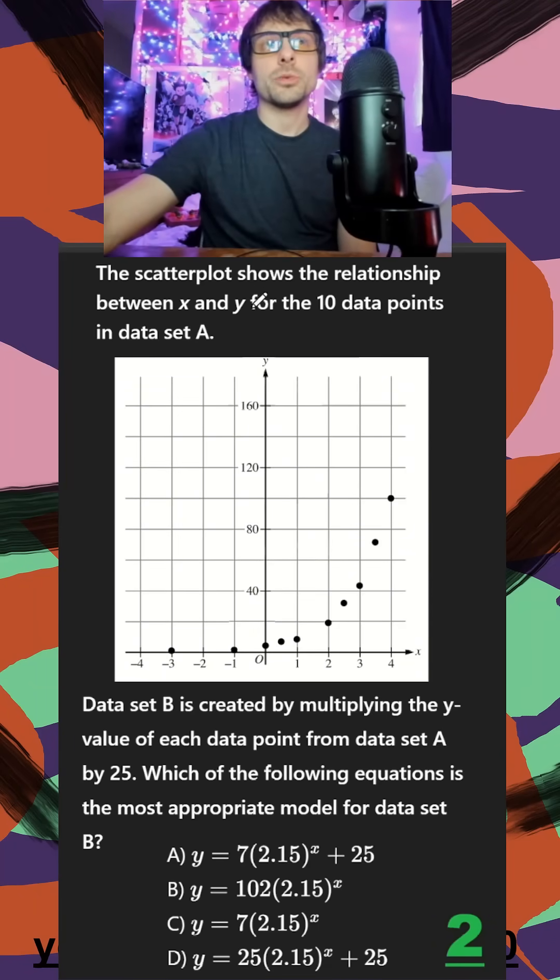I see a scatter plot showing the relationship between x and y with 10 data points from data set A. Down below, data set B is created by making a change. This is a translation problem where we want to establish graph A before we get into the change for B.